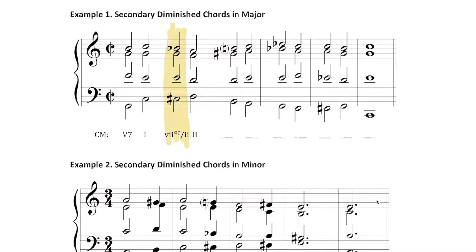Before we analyze the other chords in this progression, let's make sure we understand why this is a secondary diminished chord. The chord we are tonicizing is D minor — the two chord in the overall key of C major. That means for a moment we are thinking in the key of D minor. The leading tone of D minor is C#. What we see here is a fully diminished seventh chord with the root of C#; those notes are C#, E, G, B♭.